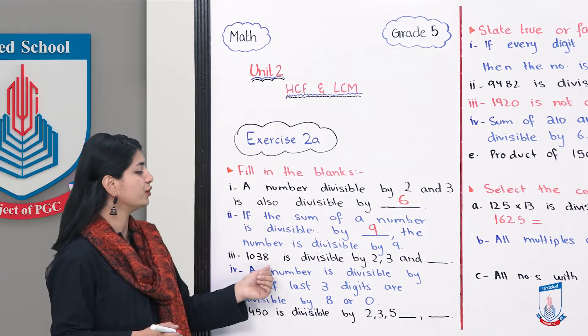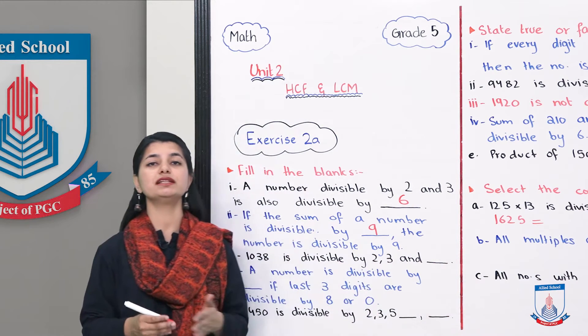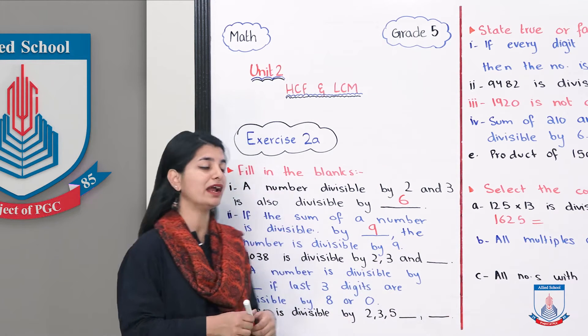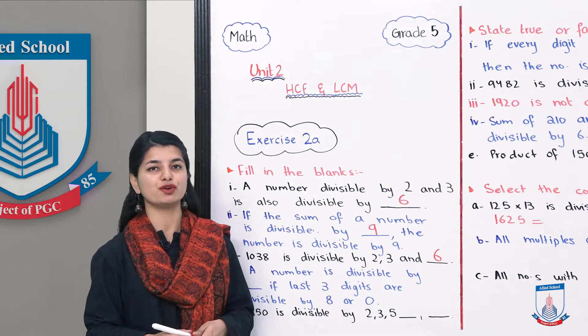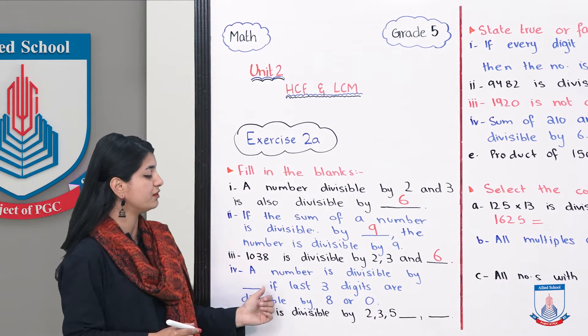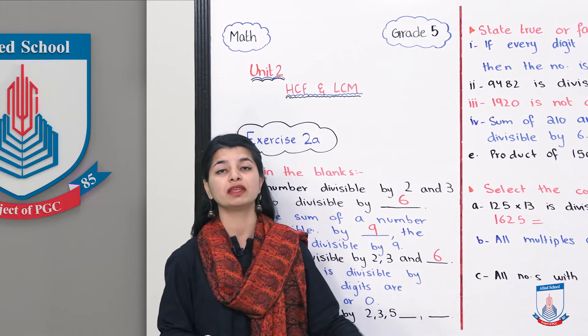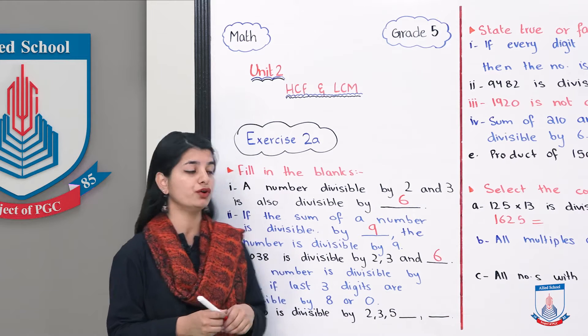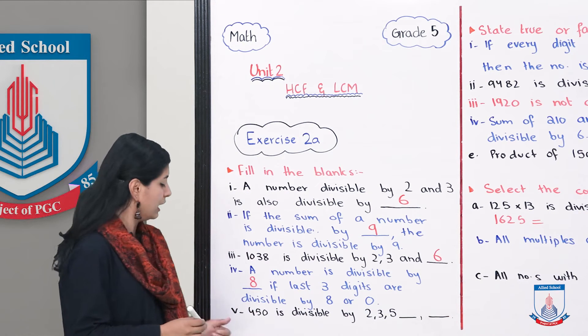Then we have: 308 is divisible by 2, 3, and dash. You can also solve this by checking divisibility. If we have these 3 digits and they are divided by 8, then we are saying that number 308 is divisible by 8.